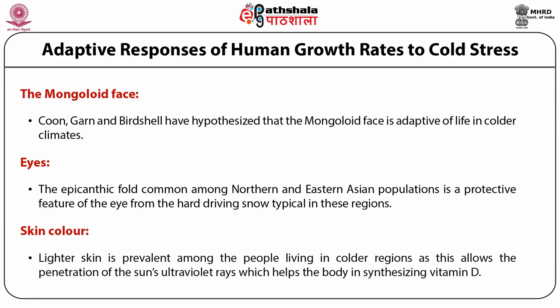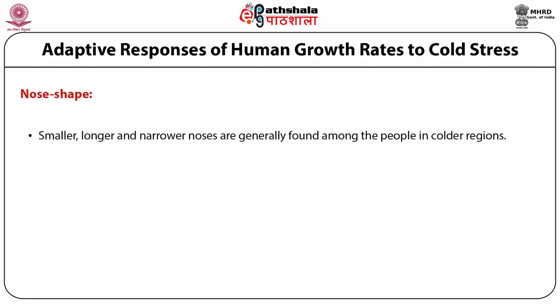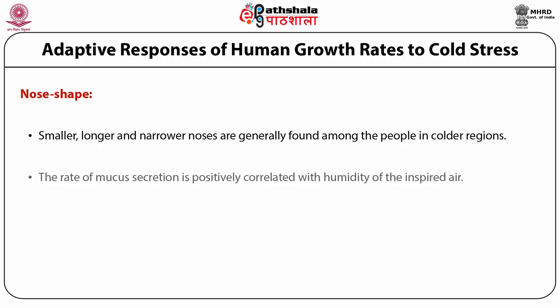Skin color: lighter skin is prevalent among people living in colder regions, as it allows penetration of the sun's ultraviolet rays, helping the body synthesize vitamin D. Nose shape: smaller, longer, and narrower noses are generally found in colder regions. This adaptive feature moistens and warms incoming air, as vapor pressure helps exchange moisture between the respiratory surface and the air. The activity of nasal cilia is reduced more by drying than by heating or cooling. The rate of mucus secretion is positively correlated with humidity of the inspired air, and drying of respiratory epithelium may cause the high incidence of sinus and respiratory infections among Eskimos.